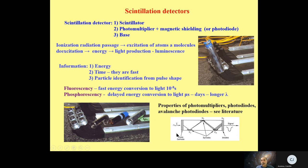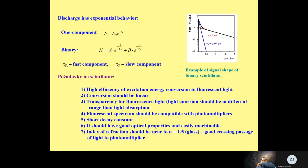An example of a photomultiplier and scintillation detectors is shown. The discharge has exponential behavior. For barium fluoride detectors, you have two components: a fast component and a slow component. This is shown in a plot with time in microseconds.